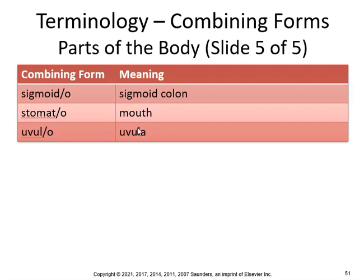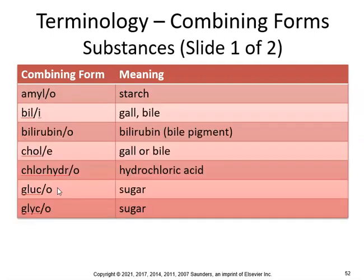Sigmoid — sigmoidoscopy, visual examination of the sigmoid. Stoma — stomatitis, inflammation of the mouth. And uvula. Okay, then you have amylo, which is amylase, an enzyme to break down starch.